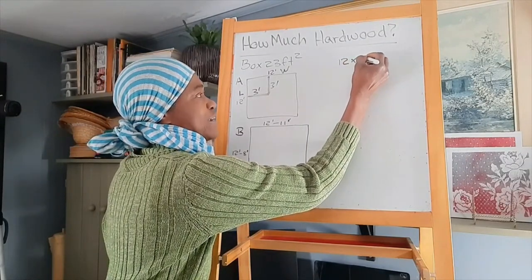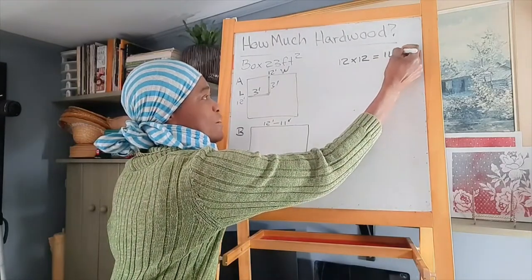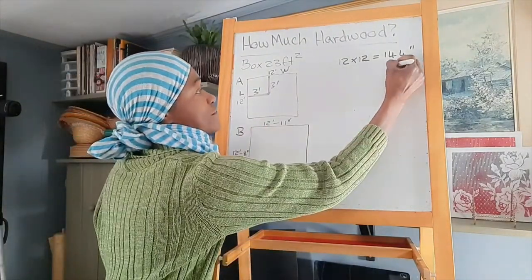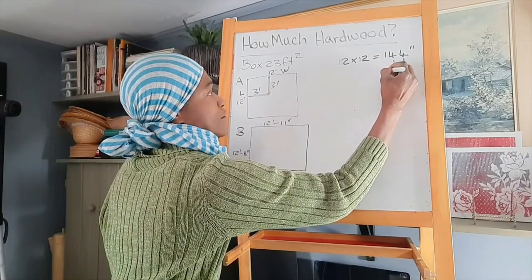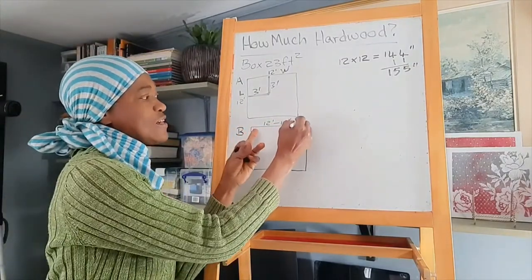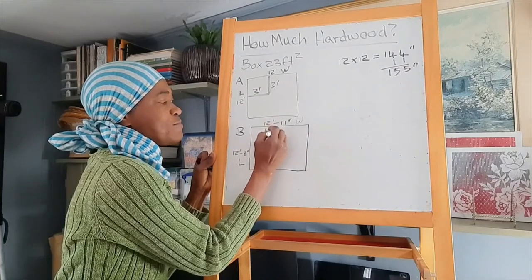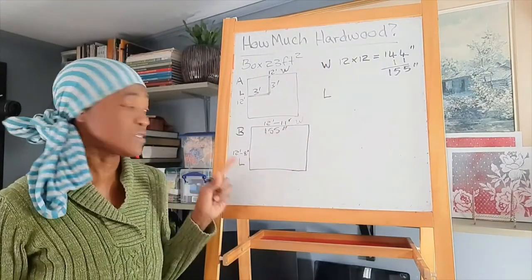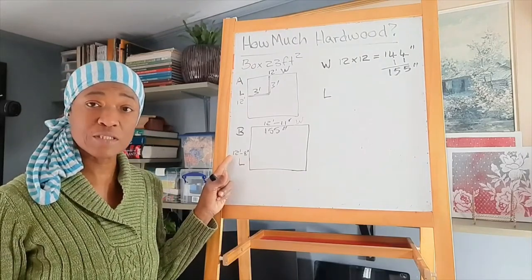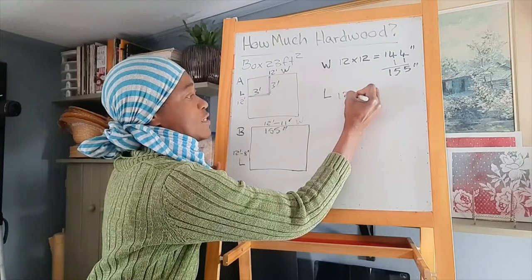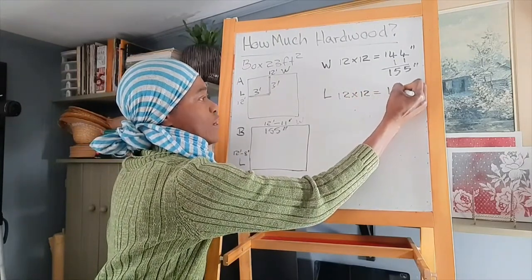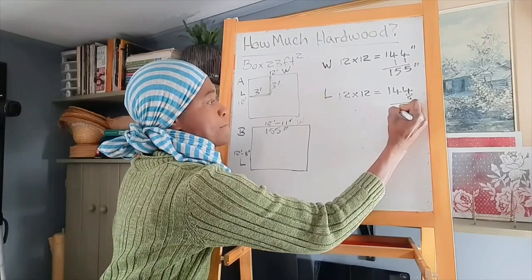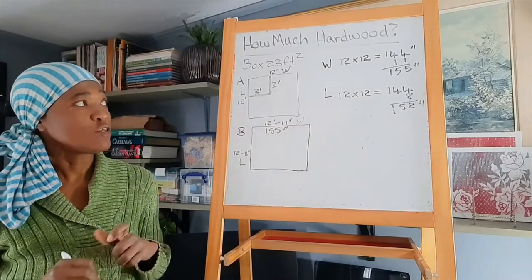we'll take these 12 here and we will multiply by 12. So it's 12 multiplied by 12 equals 144 inches. So we have 144 inches plus the 11 inches. So that's the width is 155 inches. Now let's take the length. The length is 12 feet, 8 inches. So what we'll do is convert this 12 feet into inches. And that's 12 times 12 equals 144 plus the 8 inches.